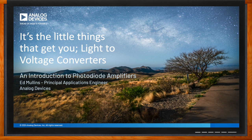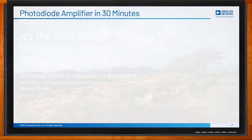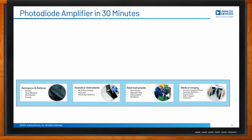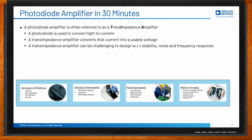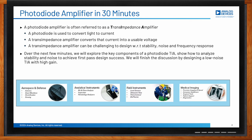For my audience who may not know, what exactly are photodiode amplifiers? Light-to-voltage conversion is a common application useful in a variety of analytical instruments, field instruments, medical imaging, and aerospace and defense systems. A common way to measure light is to use a photodiode combined with a transimpedance amplifier. The photodiode produces an output current proportional to the optical power striking it, and the transimpedance amplifier converts the photocurrent to a voltage where it can be digitized and further processed.